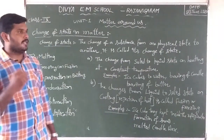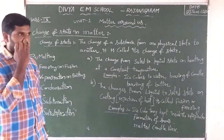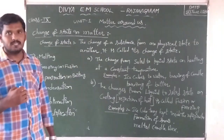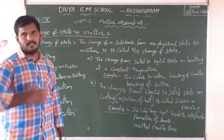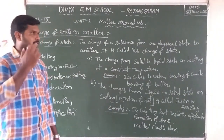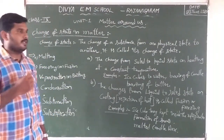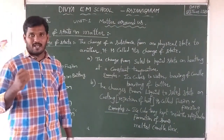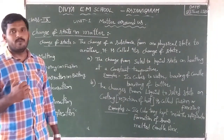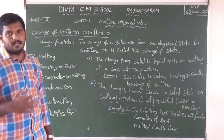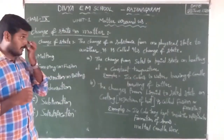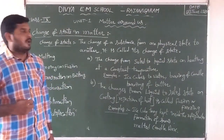Mainly, the three states involved in matter around the surface of the earth are solids, liquids, and gases. Another three states are plasma state, Bose-Einstein state, and fermionic condensate state. The last three are not important to your studies; further studies will help you follow those.